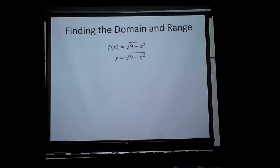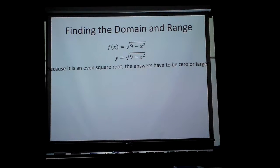So here's how I go about doing it. First off, I'm thinking about f of x is the same thing as y. And what I'm going to do is this: I know it's a square root, so the answers have to be zero or larger. So therefore, 9 minus x squared is greater than or equal to zero.